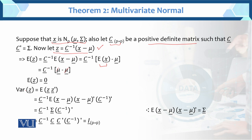Further, we need to check the variance of the transformed variable. The variance of the transformed variable equals the expected value of z z prime. So z equals c inverse times (x minus mu), and z transpose equals (x minus mu) transpose times c inverse transpose. The expected value of this equals the variance-covariance matrix sigma. So we get c inverse times sigma times c inverse transpose. Since sigma equals c times c prime, this simplifies to the p×p identity matrix.